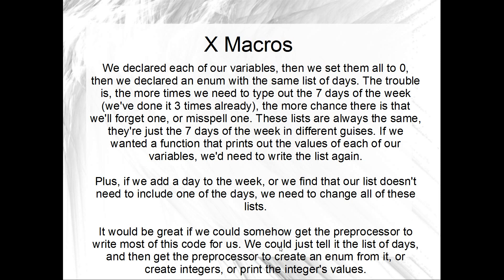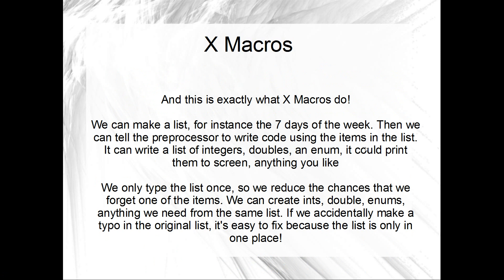Wouldn't it be great if somehow we could coax the preprocessor into writing most of this code for us? What we want to do is just tell the preprocessor the list of days and then get the preprocessor to write these lists out for us. We tell it the seven days, then get it to write out the integer declarations, the integer definitions, the enums. Wouldn't that be good? Well, that's exactly what X Macros do. We make a list of the seven days of the week, and then we can tell the preprocessor to write out that list in any different guises that we want — a list of integers, doubles with the same days, enums, print them to the screen, anything at all.